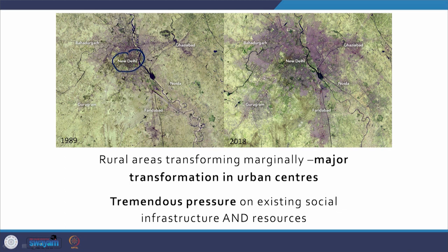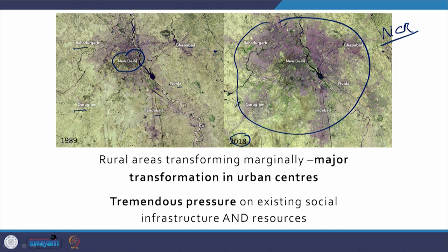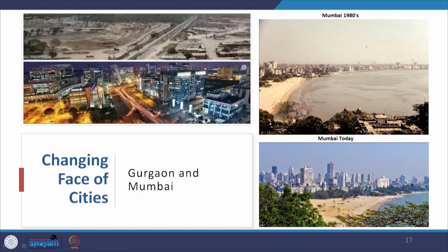This is New Delhi in 1989 — Bahadurgarh, Gurugram, Faridabad, Noida, Ghaziabad are all satellite towns but without strong linkage. Now look at the picture in 2018 and they are all part of what is now called the National Capital Region. There is a tremendous pressure on existing social infrastructure and resources. This kind of development has direct implications on architecture and planning. This was Gurgaon in the 1970s-80s and this is Gurgaon today; this was Mumbai in the 1980s and this is what Mumbai is now — this entire city has come up in this vast conglomeration of construction.